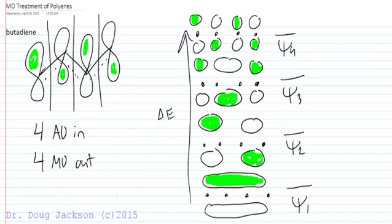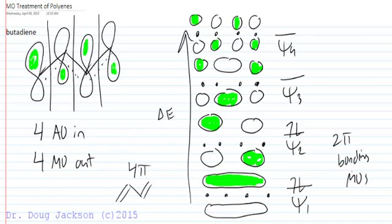Butadiene has four pi electrons, so we'll put in 1, 2, 3, and 4 for two pi bonding MOs. The anti-bonding orbitals are left unoccupied.